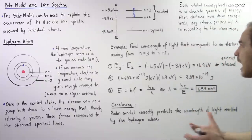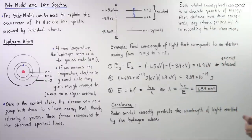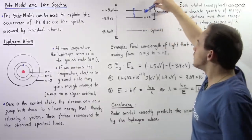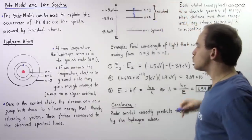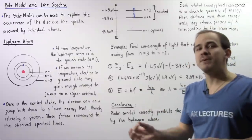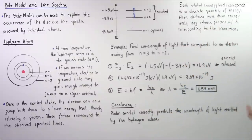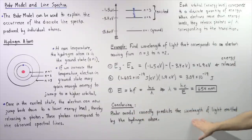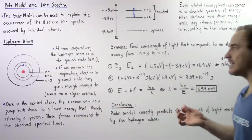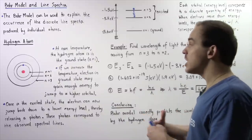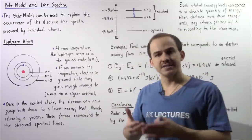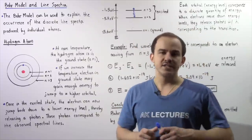If we follow the same exact procedure and calculate the wavelength of the photon released when our electron goes from n equals 2 to n equals 1, the wavelength will be a different number. What exactly can we conclude? We see that the Bohr model correctly predicts the wavelength of the light emitted by the hydrogen atom. So we can use the Bohr model to basically explain the formation of the discrete line spectra of individual atoms.